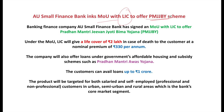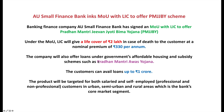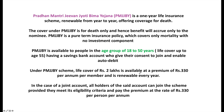AU Small Finance Bank has signed a MoU with LIC to offer Pradhan Mantri Jeevan Jyoti Bima Yojana (PMJJBY). PMJJBY is a life insurance scheme — LIC gives a cover of 2 lakh rupees in case of death at a premium of only 330 rupees per annum. The bank will also offer loans under affordable housing and subsidy schemes like Pradhan Mantri Awas Yojana, with customers able to avail loans up to 1 crore rupees targeted at salaried and self-employed customers in urban, semi-urban, and rural areas.